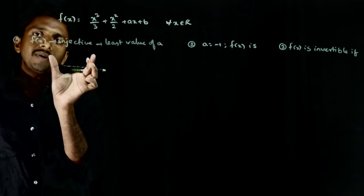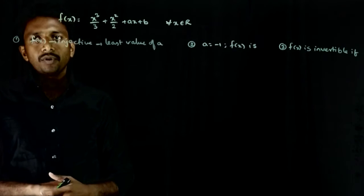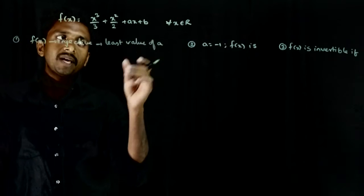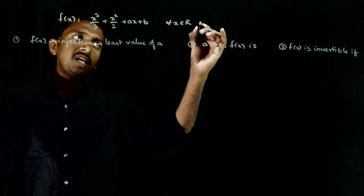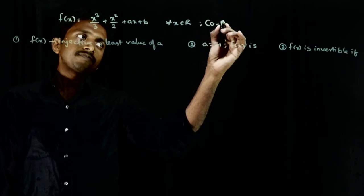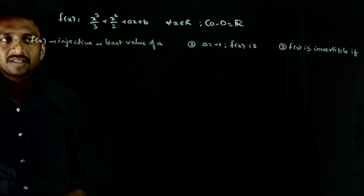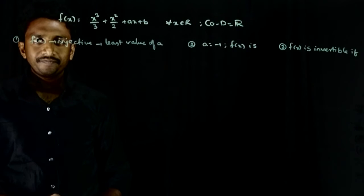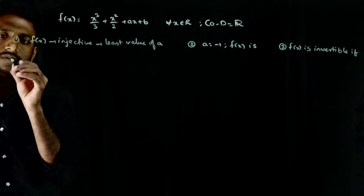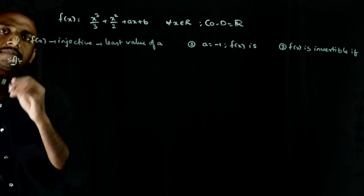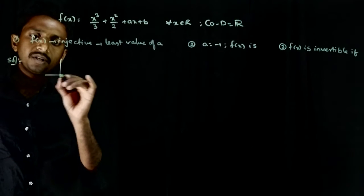So, let us first try to analyze the first question. f of x should be injective. Here, domain and range are not specified. Only x belongs to R is given, so by default co-domain is real numbers. Let us assume that this function is defined from R to R. So, this function should be one-one. We already know the question is a cubic function.